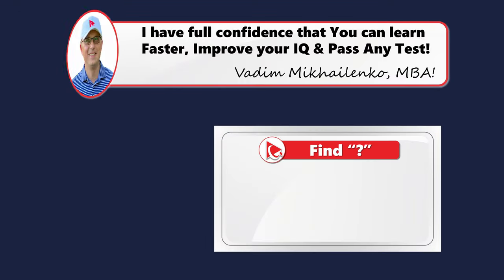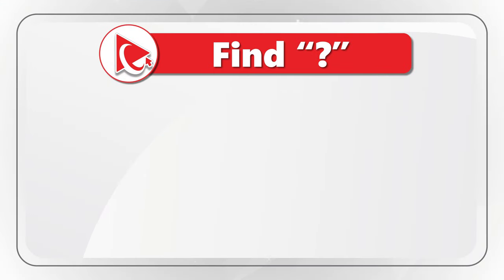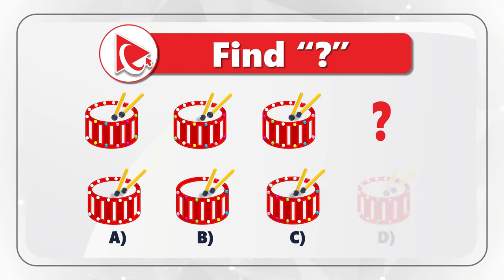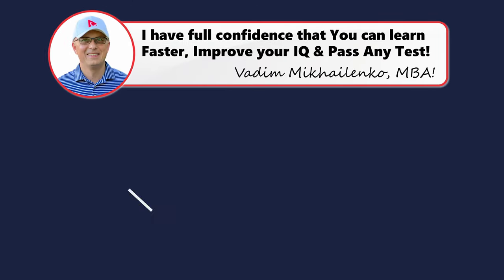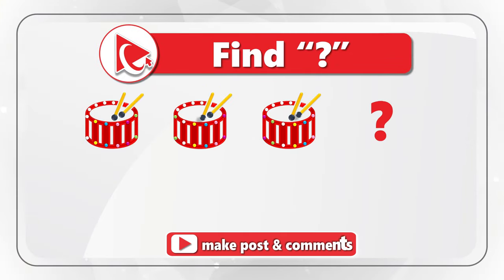Here's a very interesting drum problem which I have full confidence you will solve very quickly. You're presented with three drums and the next drum in the sequence is missing. You need to select the next drum from four possible choices: A, B, C, and D. Take a close look to see if you can come up with the answer. I'm moving forward to share my version of the solution — if you have a better way to solve it, please post in comments.